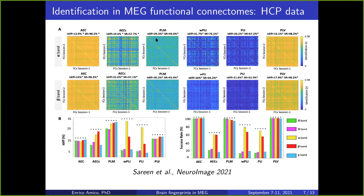We computed the identifiability matrix for each metric and every frequency band. We found very high fingerprints for most metrics, but specifically for PLM — with a success rate around 95%, similar to fMRI. Amplitude-based metrics like AEC also showed very high values in alpha and beta bands. PLM won for most frequency bands in terms of success rate. This confirmed that we can extract brain fingerprints from MEG data, but we wanted to know what information these fingerprints encode.